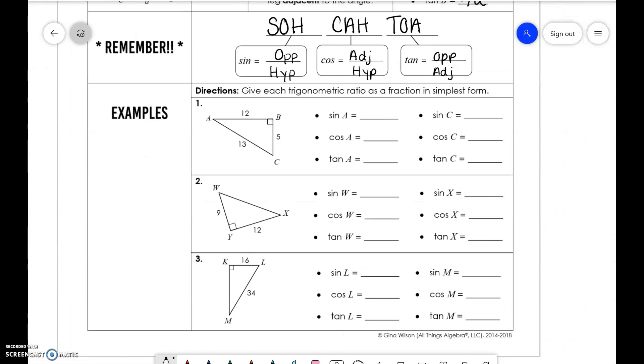We're going to write the ratios for each of these based on our trig functions. For sine of A, sine of A is going to be 5 over 13. Cosine of A is going to be 12 over 13. Tangent is 5 over 12. Sine of C is 12 over 13. Cosine is 5 over 13. And tangent is 12 over 5.